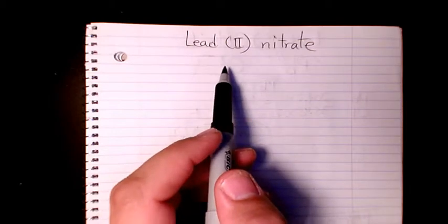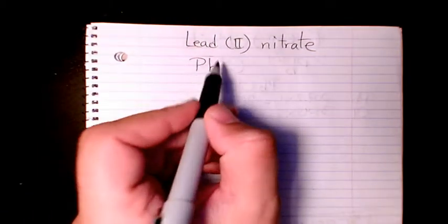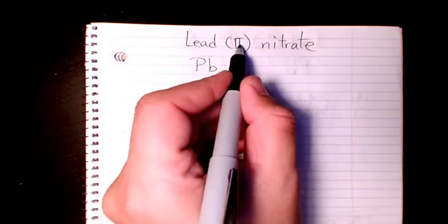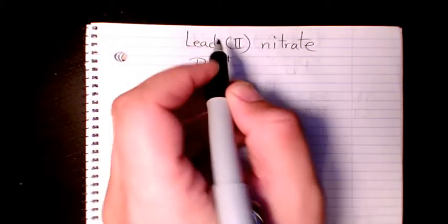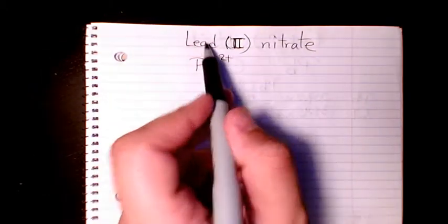Lead is Pb, that's the symbol for lead, and the charge is gonna be two plus because we can have different charges for lead. And that's why we need to show you the number, so it's gonna be Pb2+.